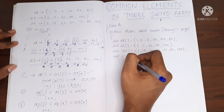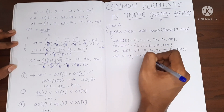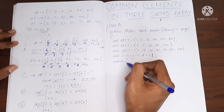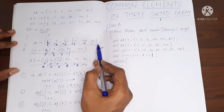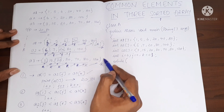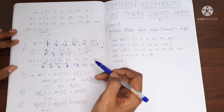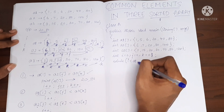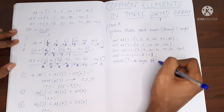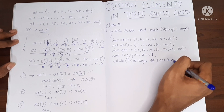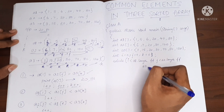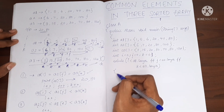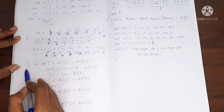Now let's write the program. I will declare i for the first array, j for the second array, and k for the third array. I will use a while loop. The condition for the while loop: it should run only while i is less than a1.length, and j is less than a2.length, and k is less than a3.length. Otherwise it should terminate.